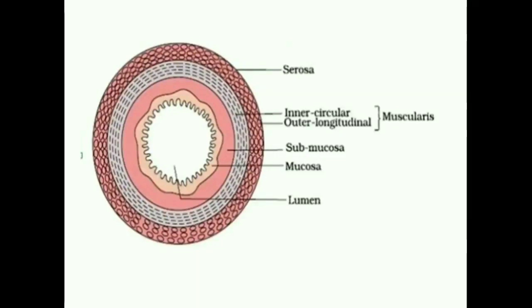As we know, the gut has five layers. The outermost is the serosa, then there is the muscular layer, and inner to that there is the submucosa, the mucosa, and the lumen. The fifth layer is the interface between the lumen and the mucosal layer.